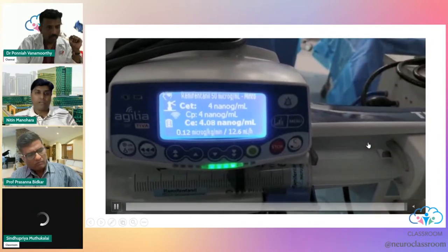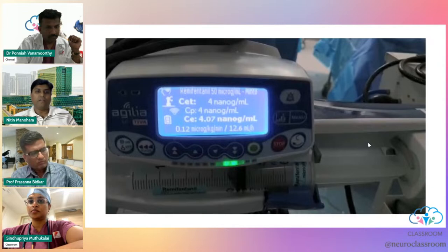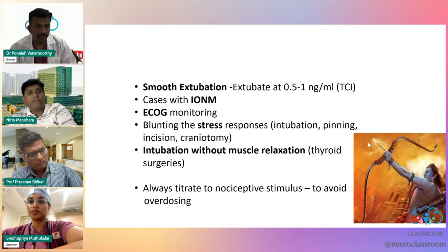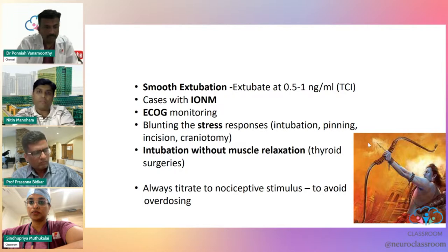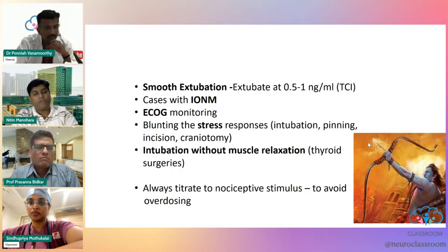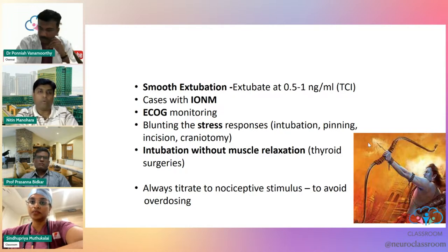Very quick onset and very quick offset. Once you start using it, you will know how to titrate and use it. It can be used for smooth extubation, which is desired in most neurosurgical cases — extubate at about 0.5 to 1 ng/ml TCI effect-site concentration, giving very good extubation conditions.